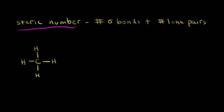The concept of steric number is very useful because it tells us the number of hybridized orbitals that we have. To find the steric number, you add up the number of sigma bonds, or single bonds, and to that you add the number of lone pairs of electrons.